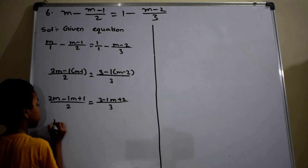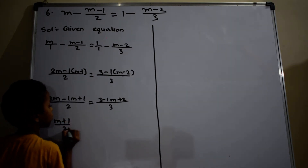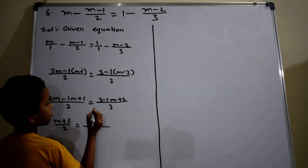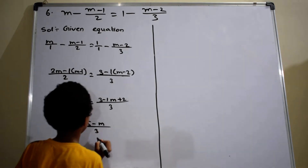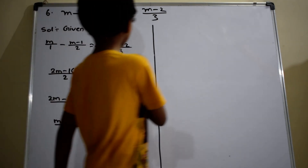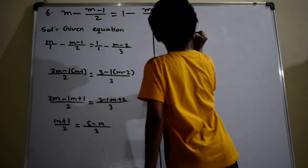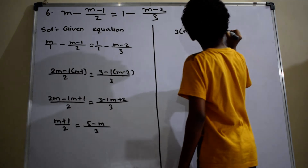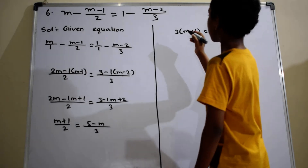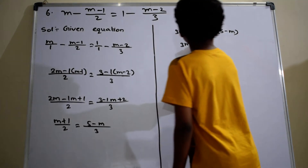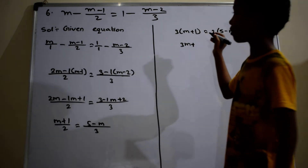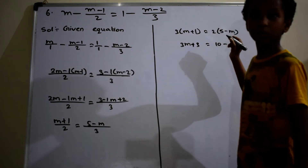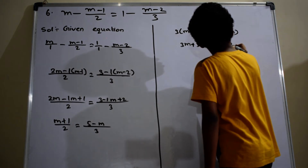Then 2 into (M minus 2) and 3 into (M minus 2). In this step I am cross multiplying. 3 into (M plus 1) equals to 2 into (5 minus M). So 3 into M equals to 3M, and 3M plus 3 equals to 10 minus 2M.